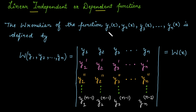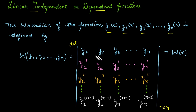Take n functions y1, y2, y3, up to yn. The Wronskian of these functions is calculated as the determinant of an n by n matrix. We take these n functions in the first row, then their first derivatives in the second row, then their second order derivatives in the third row, continuing until the (n−1)th derivative of each function in the last row.